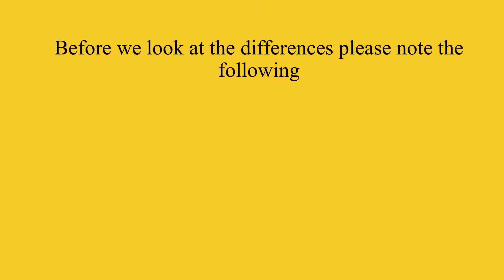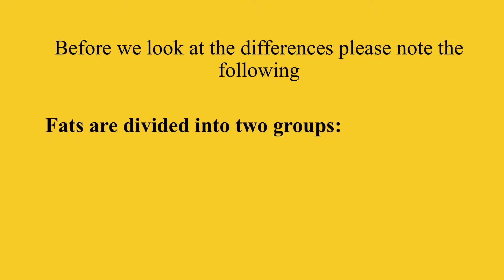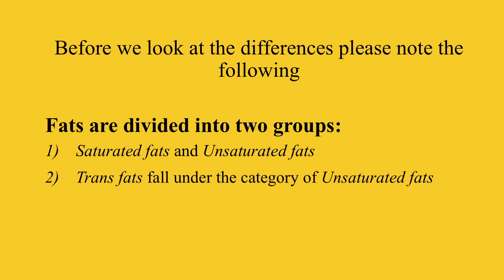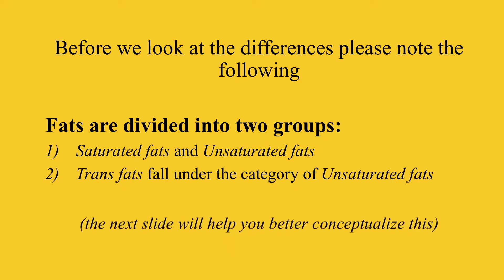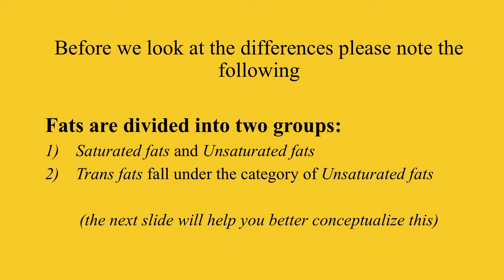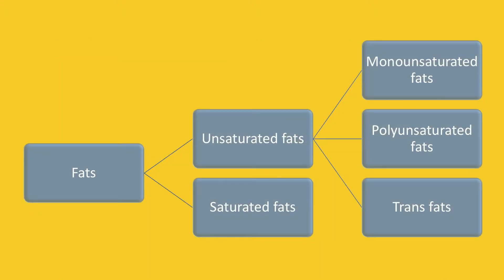Now that we are aware of the similarities, let's look at the differences. Please note: fats can be generally divided into two categories — saturated fats and unsaturated fats. Trans fats are a type of unsaturated fat. This schematic diagram will help you better understand this categorization.